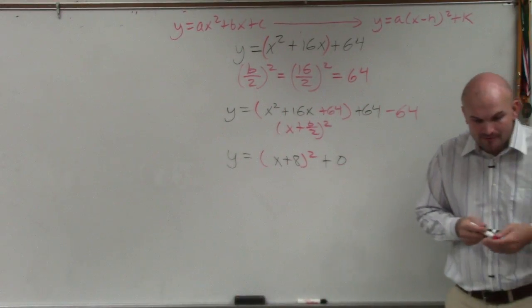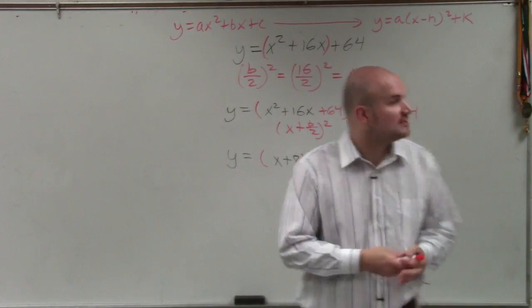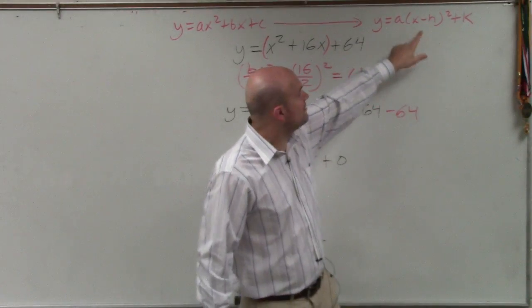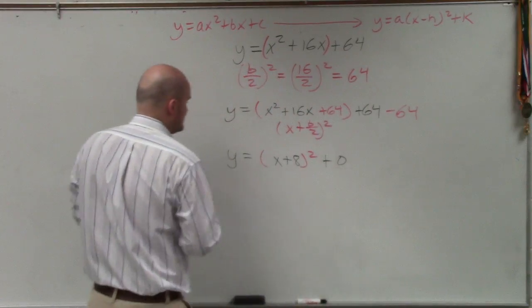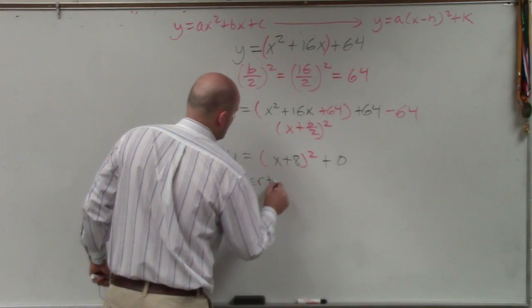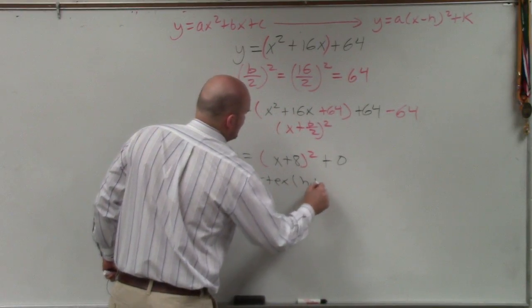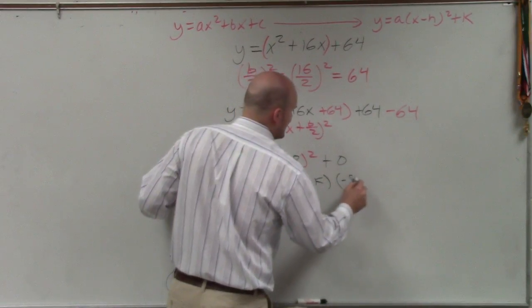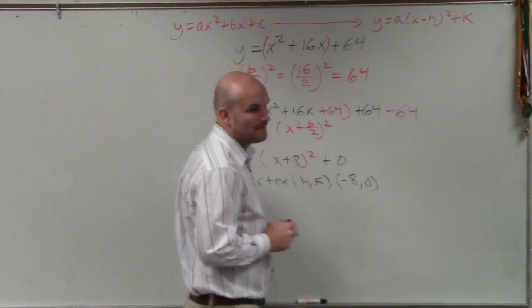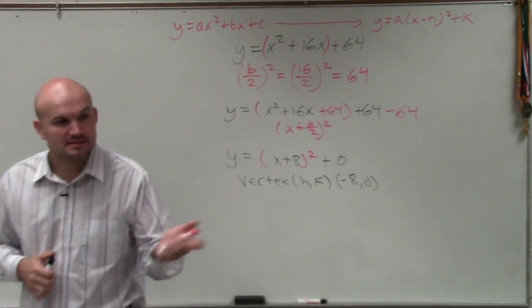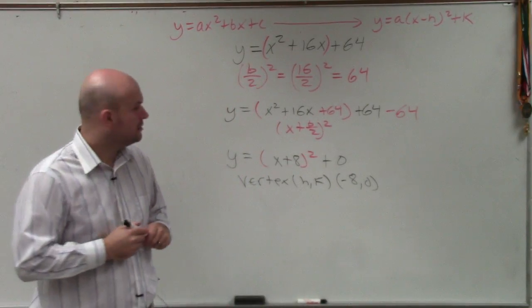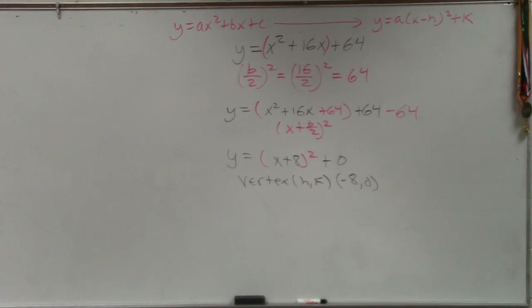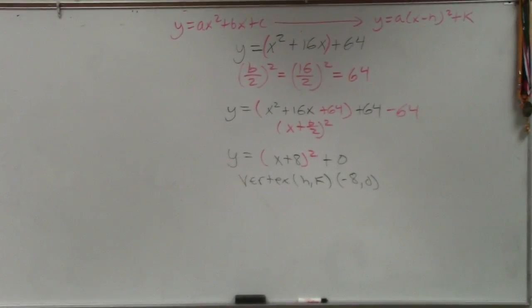So now, all they're asking you to do is find the vertex. So we know it's in this format. Remember, vertex is h comma k. So in this case, your vertex is h comma k. Remember, it's always the opposite. So your final answer is negative 8 comma 0. It's OK. There's multiple ways that you can go through these problems and do it.